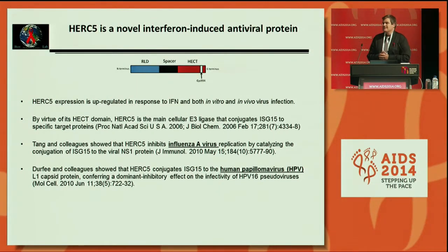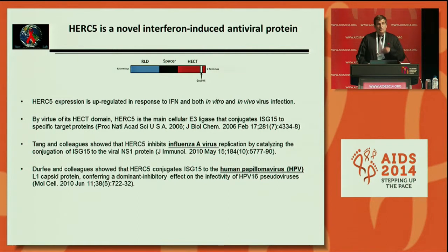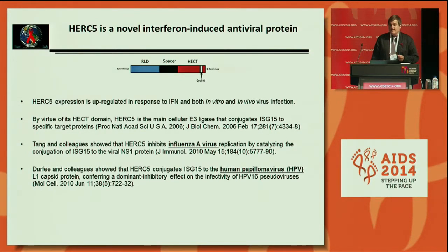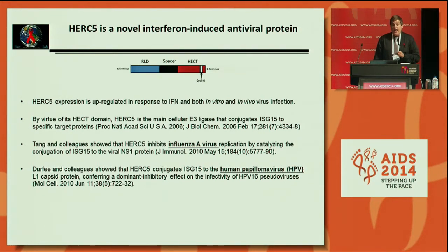HERC5 is a large 110 kilodalton protein composed of three major domains: the RLD domain (RCC1-like domain), the spacer domain, and the C-terminal HEC domain. HERC5 is upregulated in the presence of interferon and has also been shown to be upregulated in vitro and in vivo during HIV infection. By virtue of the HEC domain, HERC5 is the main cellular E3 ligase that conjugates ISG15 to specific target proteins. ISG15 is a ubiquitin-like molecule that is also interferon-induced, binding target proteins — cellular or viral — to alter their activity or interacting partners.